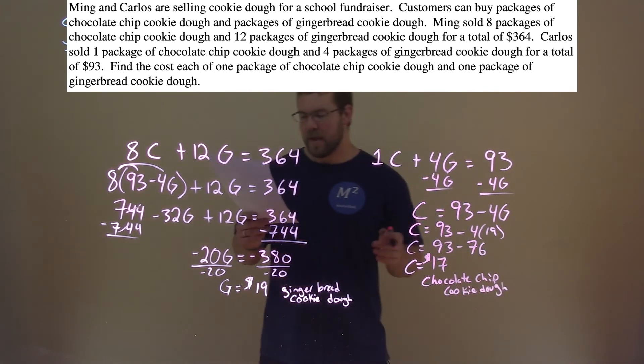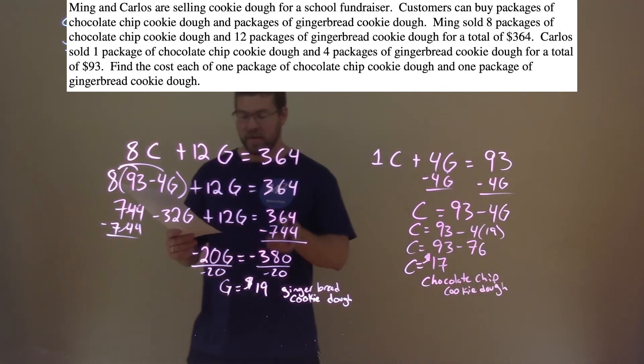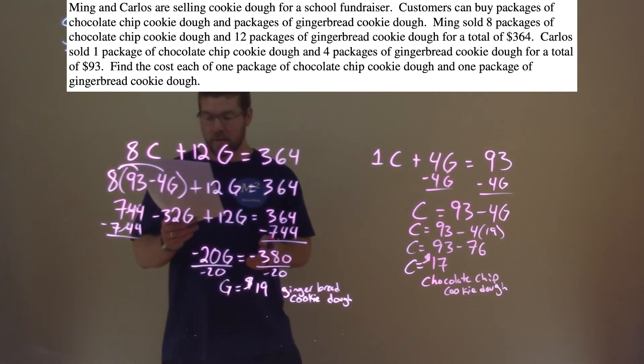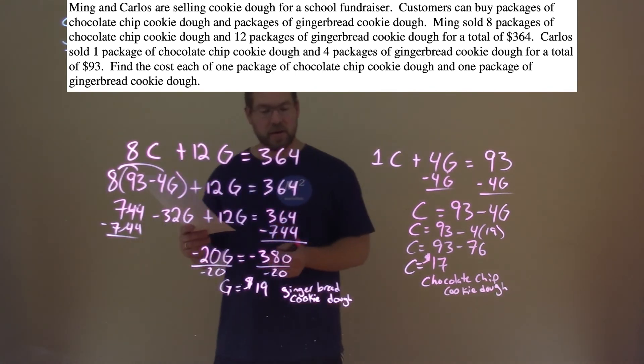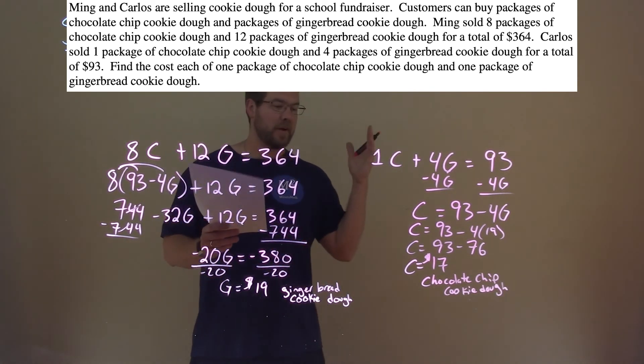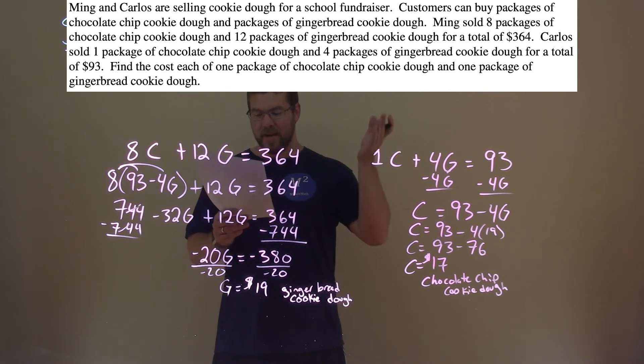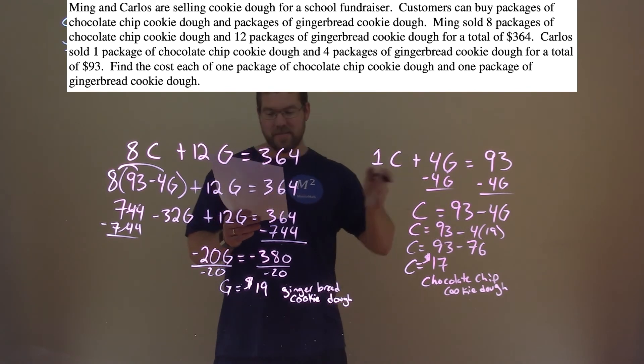And there we have our final answer. The price of the package of gingerbread cookie dough is $19, and the price of the package of chocolate chip cookie dough is $17.